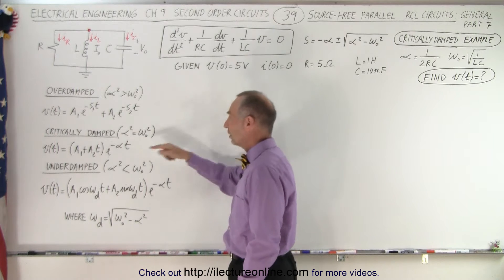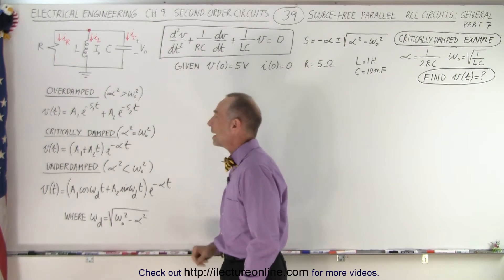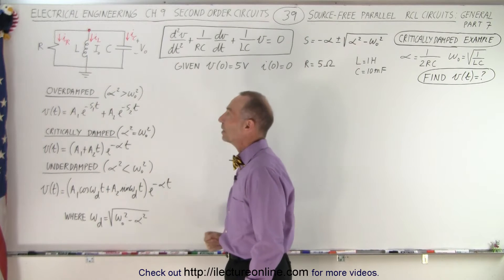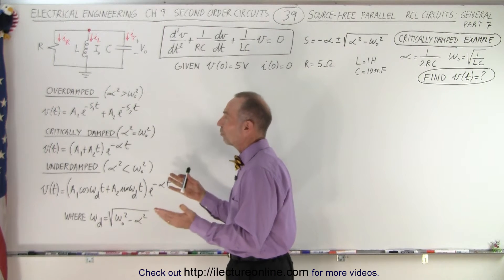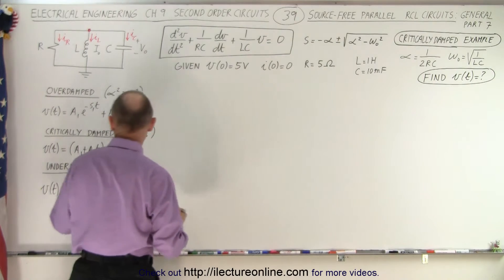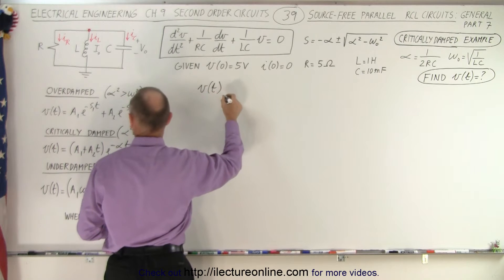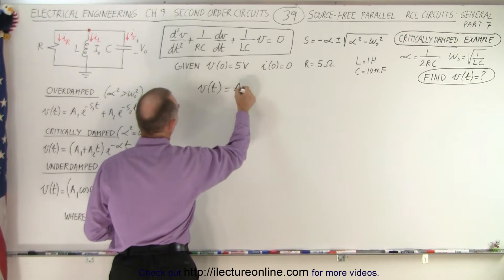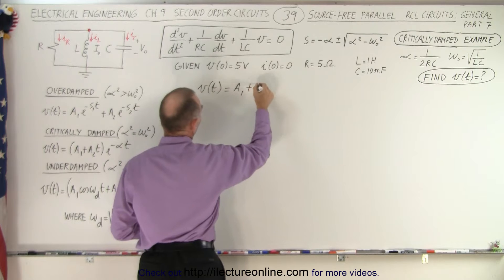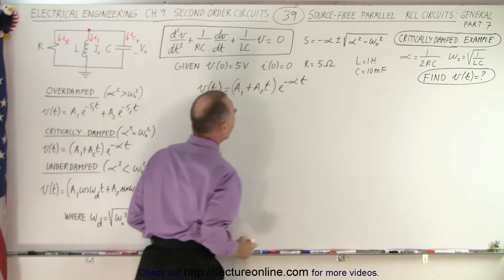So we're going to use this equation right here, which is the general solution to a critically damped situation where we have an RCL circuit which is source free and the components are parallel to one another. Let's write down the equation so we can say that the voltage as a function of time is equal to A sub 1 plus A sub 2 times T times E to the minus alpha T.